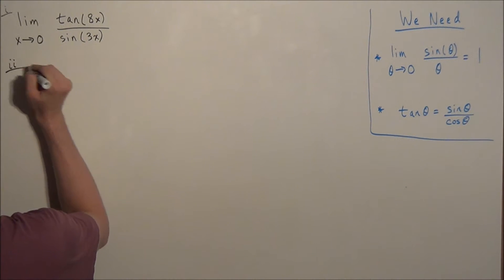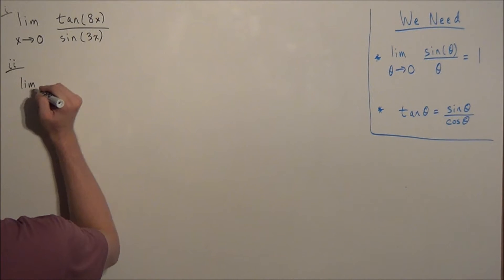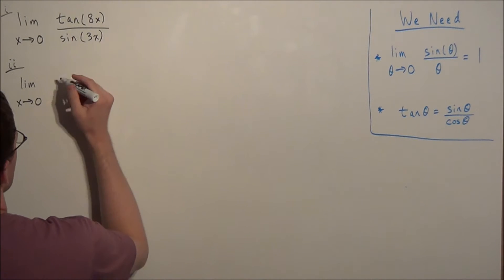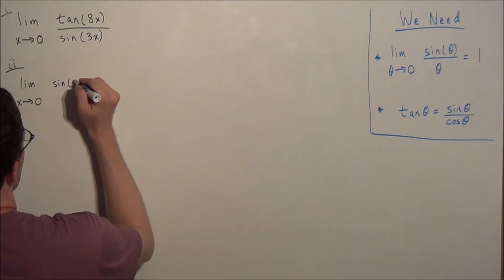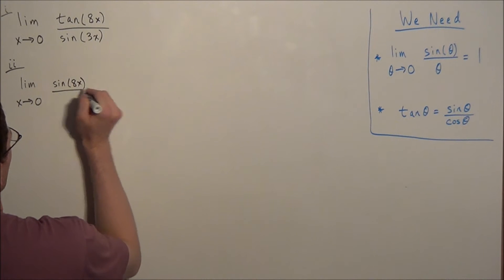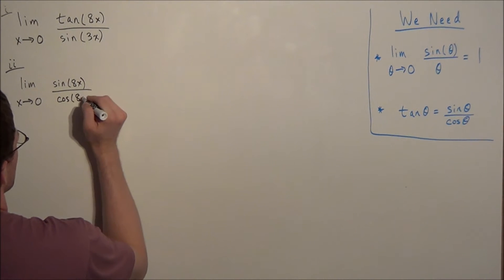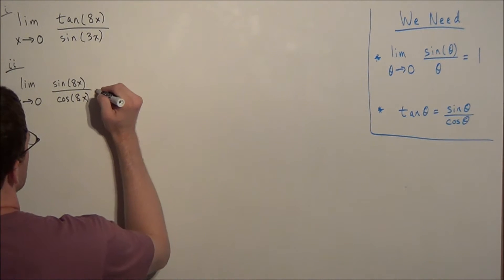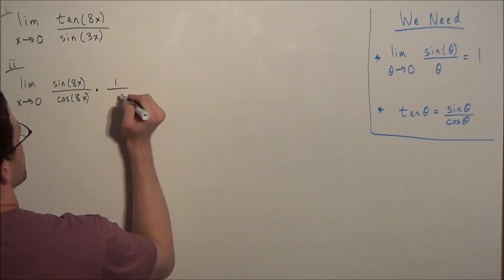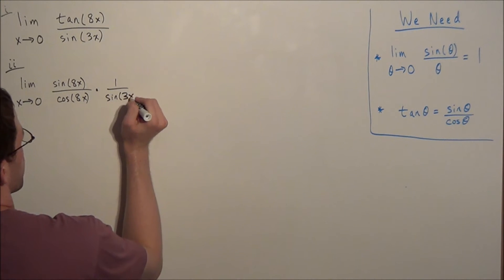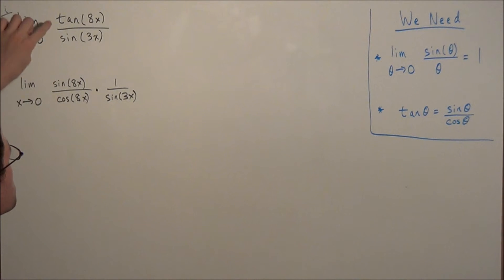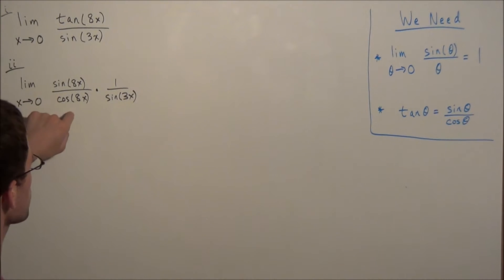We'll call the original expression line 1. For line 2, we have the limit as x approaches 0, and instead of tangent of 8x, we substitute sine of 8x divided by cosine of 8x. The sine 3x in the denominator we write as times 1 over sine 3x, separating the fraction into two parts.